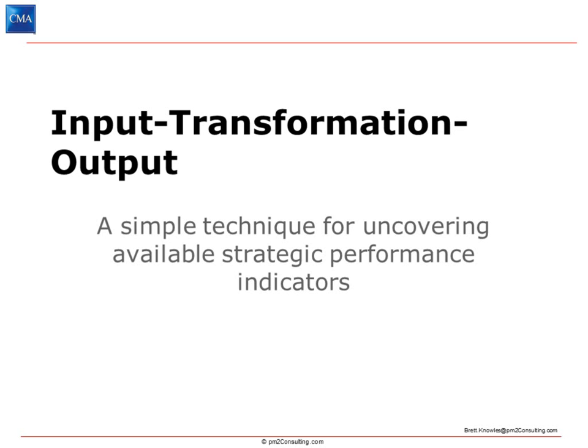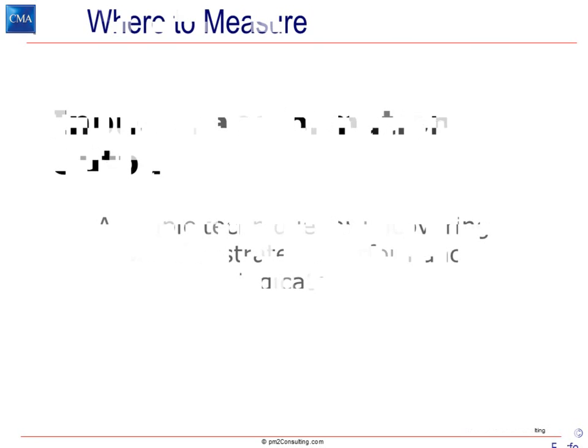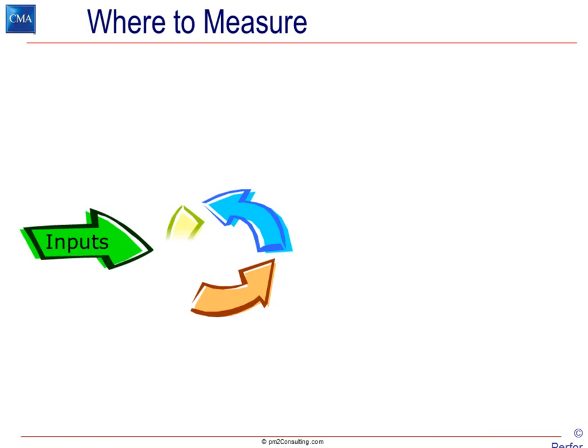We found that this simple trick of looking for the inputs, transformations, and outputs is an effective tool to sort that out. Here's the issue: every single process has some inputs, a transformation, and an output.